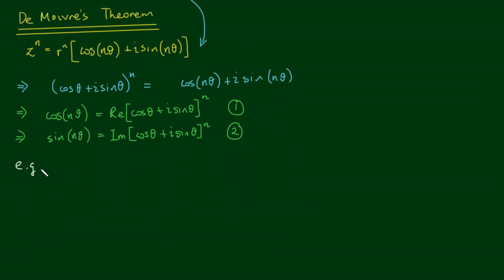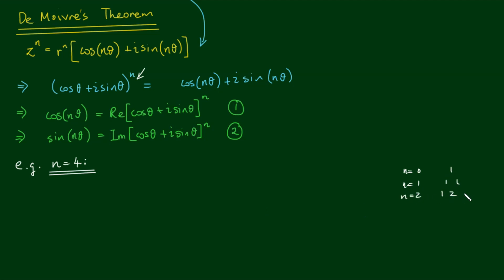Let's do an example with n = 4. To complete this, I need a binomial expansion, and I'll use Pascal's triangle. For n = 0: 1; n = 1: 1, 1; n = 2: 1, 2, 1; n = 3: 1, 3, 3, 1; and for n = 4: 1, 4, 6, 4, 1.